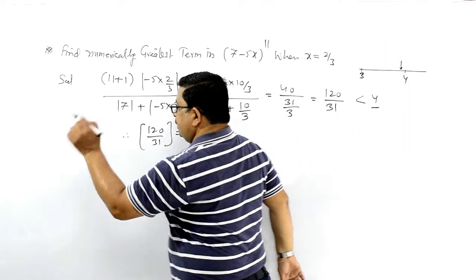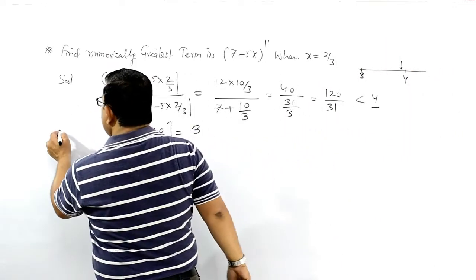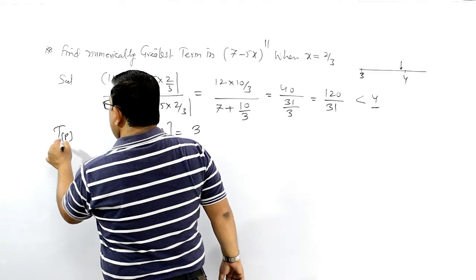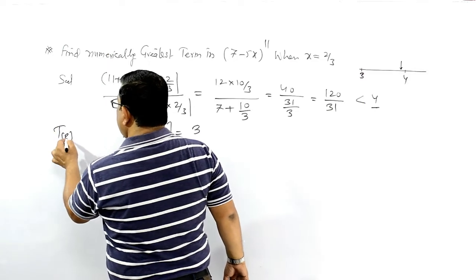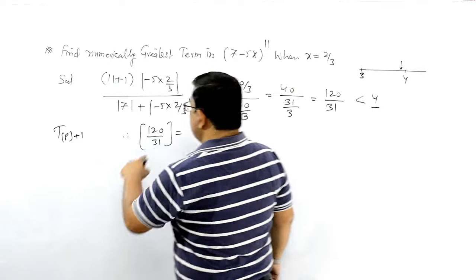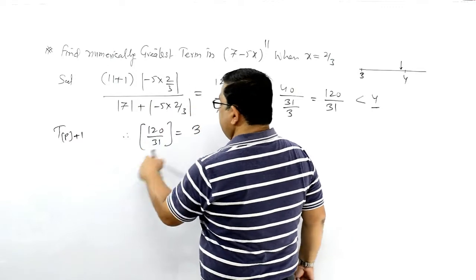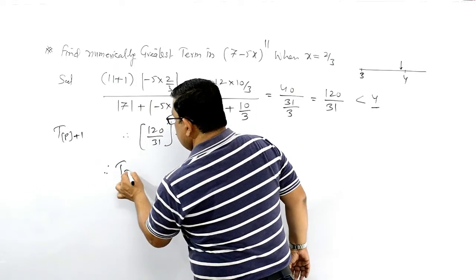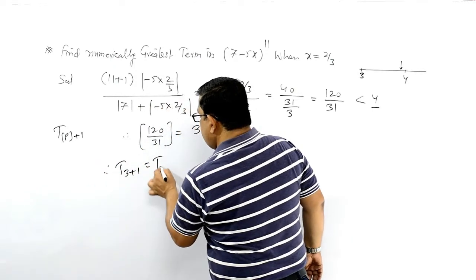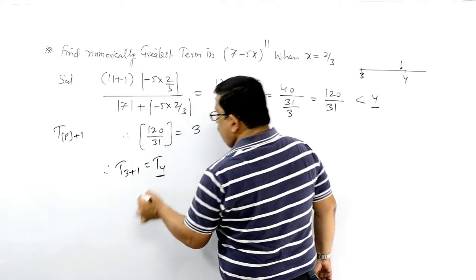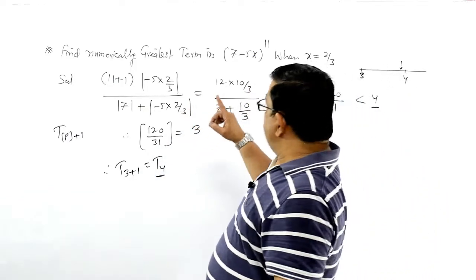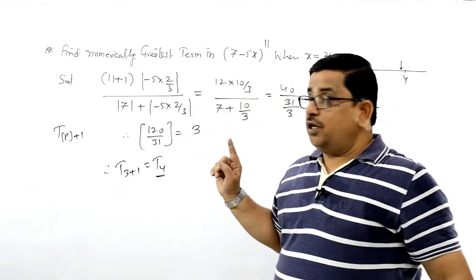हम T(p+1) लिखते हैं। इसकी box value 3 आ चुकी, so T(3+1) = T4. 4th term इसकी numerically greatest term होगी।